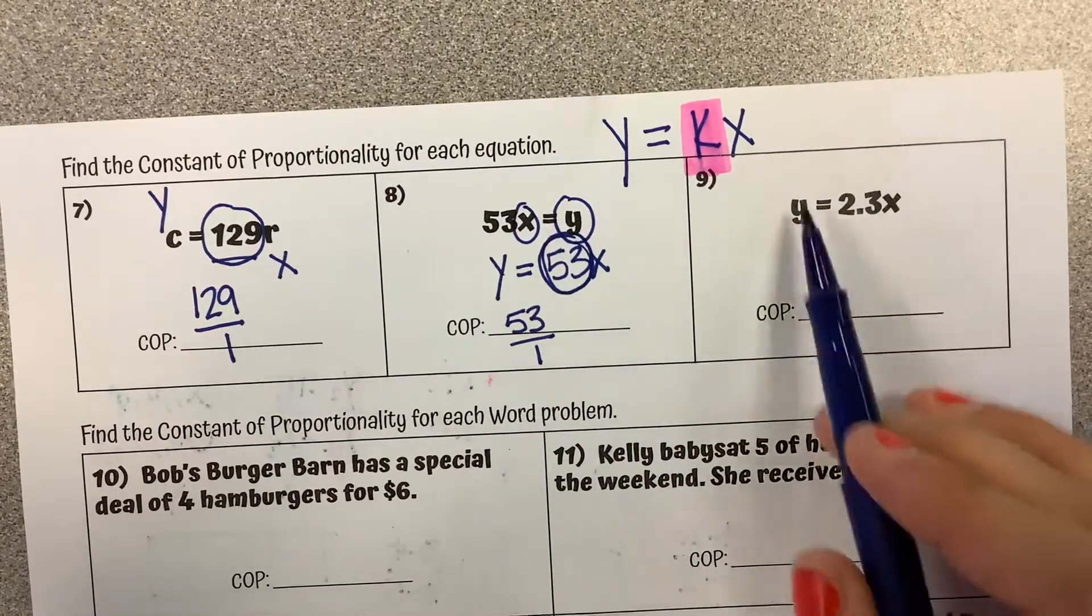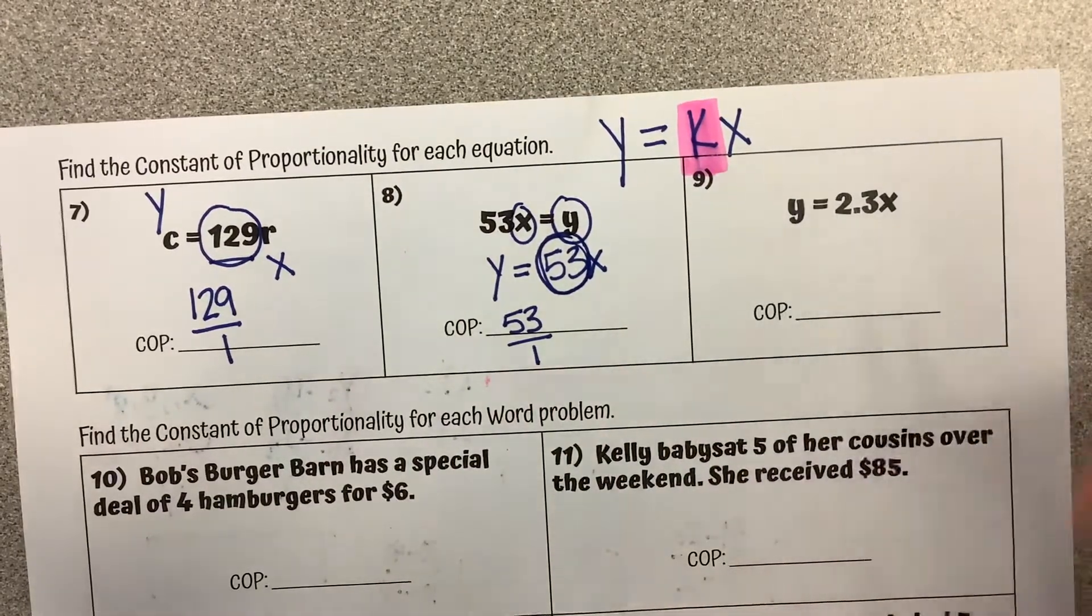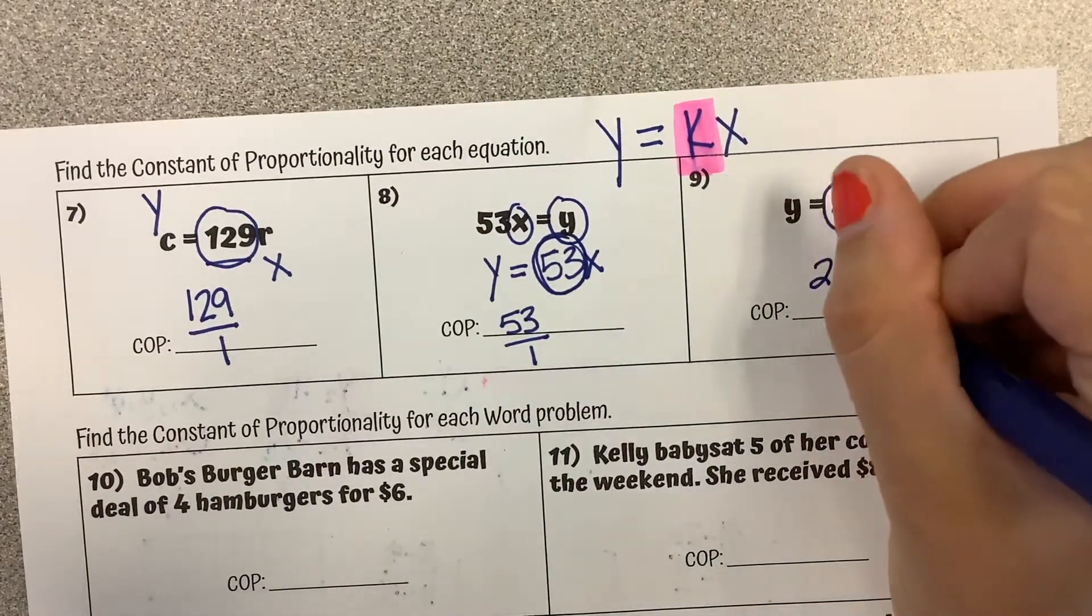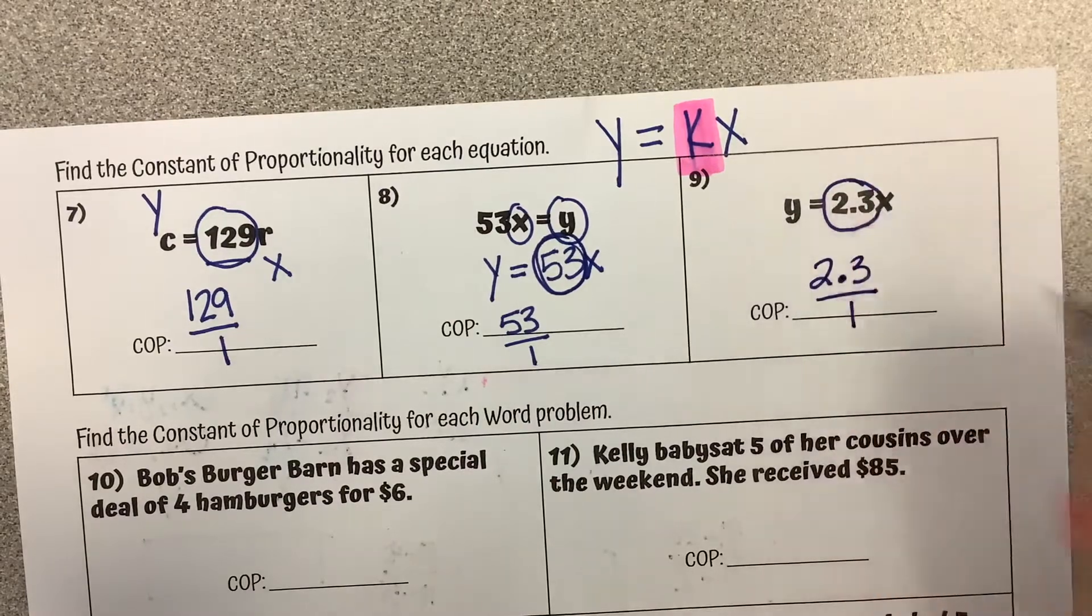This example is in the form that I showed you. We're looking at what is being multiplied by x. That's 2.3. I'm going to write it as 2.3 over 1 even though that looks kind of messy.